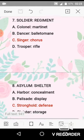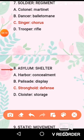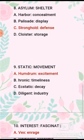Question No. 8 is asylum and shelter. Asylum means taking shelter, so they are related in meaning. The analogous option is option C — stronghold and defense. A stronghold provides defense just as an asylum provides shelter. So question No. 8, the correct analogy is option C.